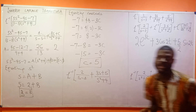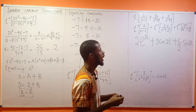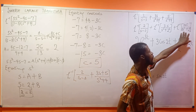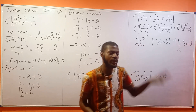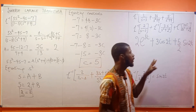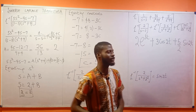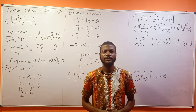So this is the final answer to the question: 2e^(3t) plus 3cos(2t) plus (5/2)sin(2t). I think we're going to be doing more of this type of expression so that you would understand it properly. Thank you very much for watching this video.